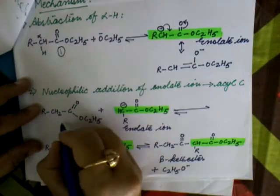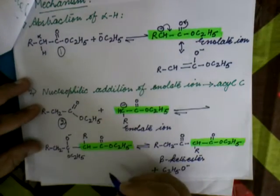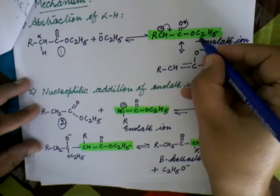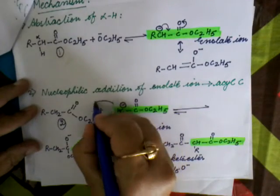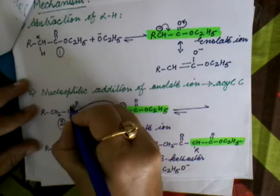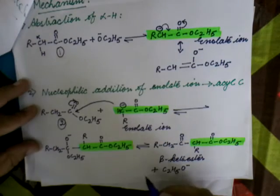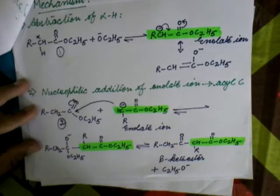The second ester molecule will act as acylating agent. Enolate ion which is generated in the first step will attack carbonyl group of second ester molecule, and there is formation of carbon-carbon bond.